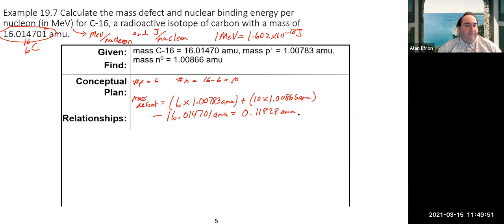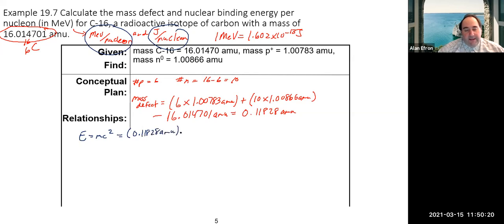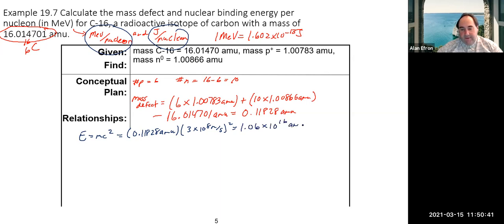That small amount of mass is converted into energy. Now, since we want both units, we can use Einstein's equation: E = mc², where m = 0.1189 amu and c = 3 × 10⁸ m/s. That gives us approximately 1.06 × 10¹⁶ amu·m²/s².